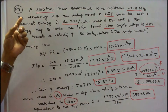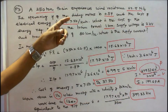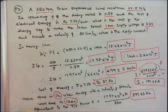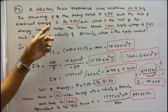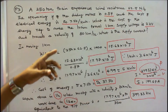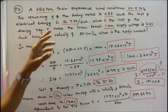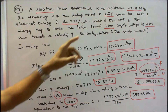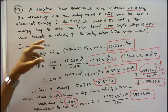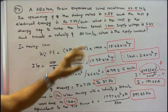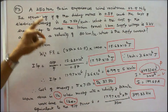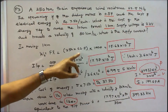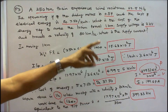Problem 3: A 250-ton train experiences wind resistance of 62.5 N per ton. The operating efficiency of the driving motors is 0.87 and the cost of electrical energy is Rs. 7.50. What is the cost of energy to make the train travel 1 kilometer? The supply voltage is 2 kV and velocity is 80 km/h. In moving 1 km, the work done equals 250 into 62.5 into 1000, which is 15.63 into 10⁶ joules.